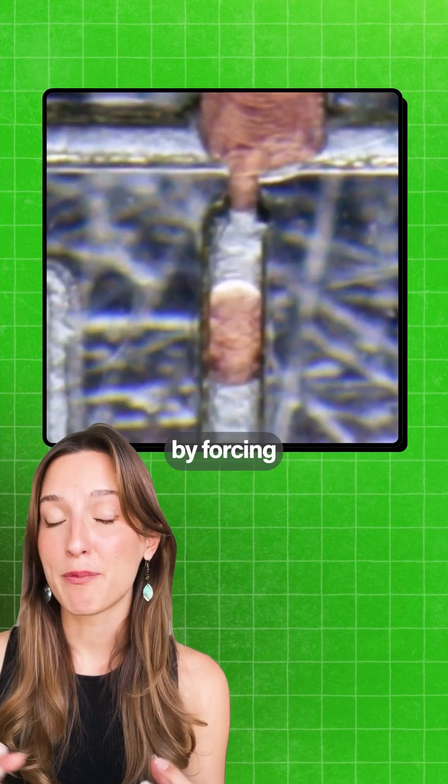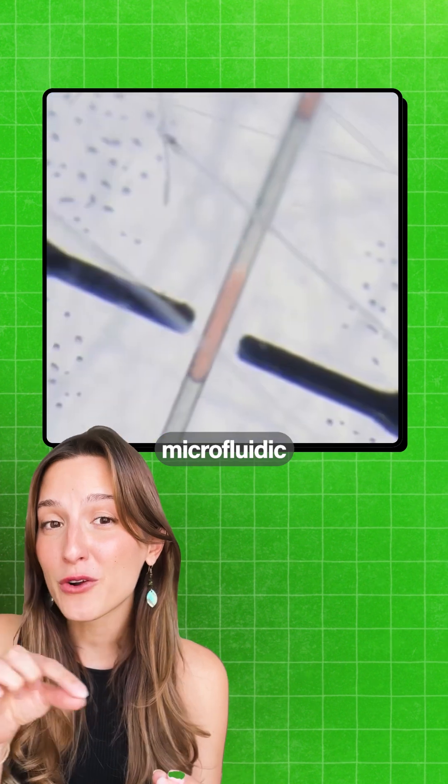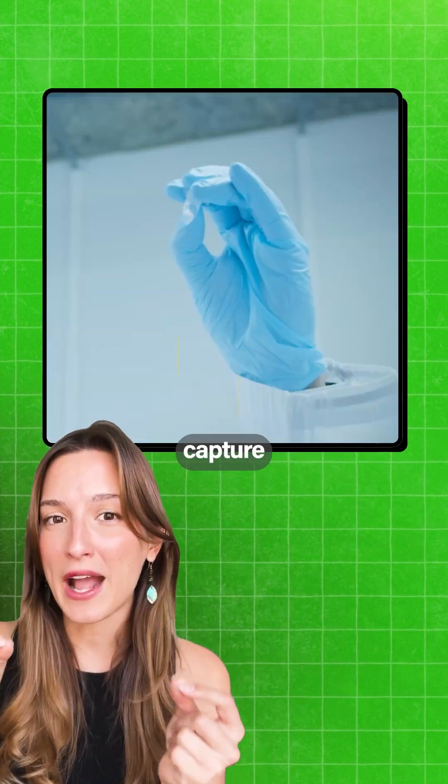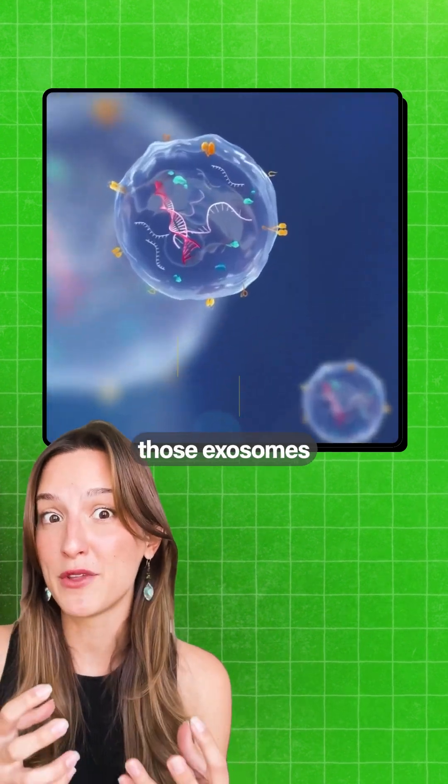Crave intersects those packages by forcing urine down microfluidic tracks and then has designed a cellulose nanowire, tiny little capture mechanisms in order to grab those exosomes.